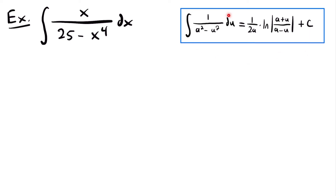The reason we are going to use this integration rule for this function is because the function in the integral has a similar structure to the function in our integration rule. The part you want to pay attention to is the denominator, where we have a squared minus u squared, where a is a constant and u is a function of x. In the denominator of our function in our integral, we have 25, which would be a squared, minus x to the fourth power, which would be u squared. And so if we set 25 equal to a squared and x to the fourth power equal to u squared, we can figure out what a and u will be equal to.